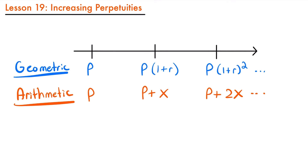Remember that a perpetuity is a series of payments that never ends — the payments continue forever. Because of that, it only makes sense to look at perpetuities in which the payments are increasing. We're not worried about decreasing perpetuities because if you decrease every payment, eventually you hit a payment of zero dollars, so there is a set end to that series. It doesn't make sense to look at a decreasing perpetuity, but it does make sense to look at an increasing one where the payments increase forever.